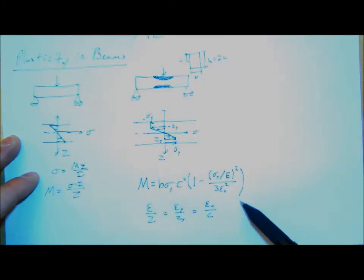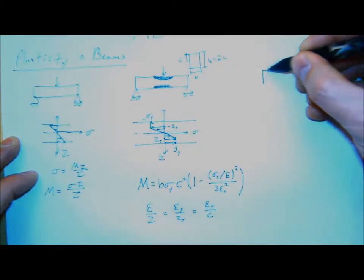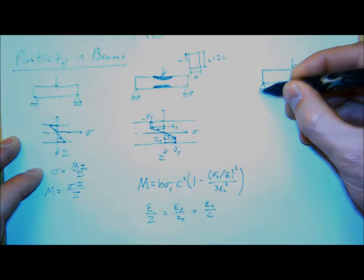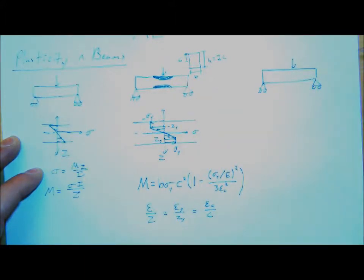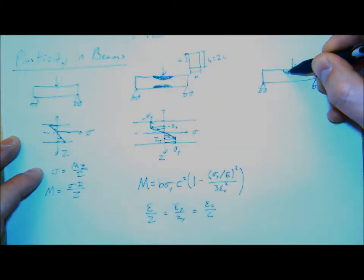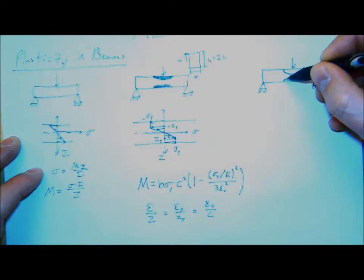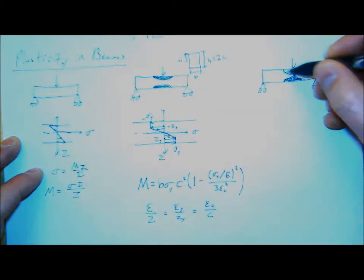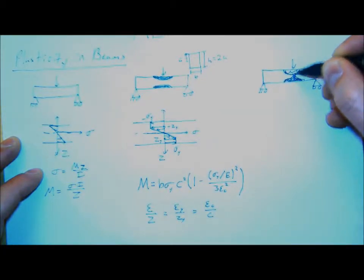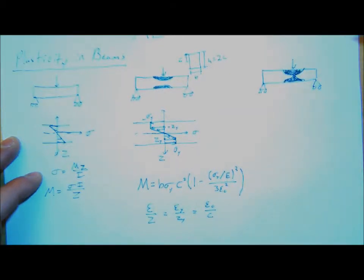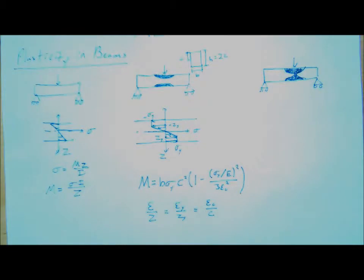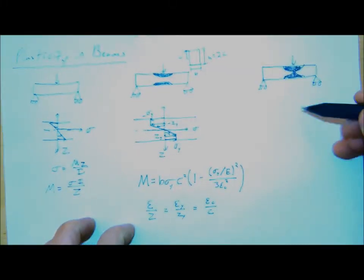If I keep applying higher and higher loads, eventually I'll form something known as a plastic hinge. This is a pretty common feature in beams. These plastically deforming states on the top and bottom will eventually connect, and you'll get a plastic region in the middle of the beam where a lot of the deformation will localize. In the lecture I showed a paperclip bent up and down to illustrate that plastic zone localizing.